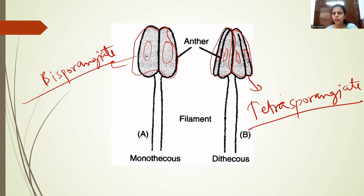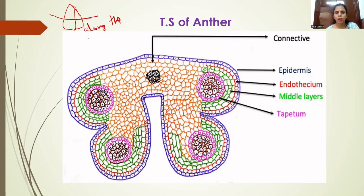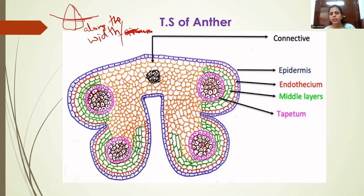Next we will discuss the TS — transverse section — of anther. To take a transverse section, you cut the anther from the center along the width. When you cut the anther along the width and take a thin section and observe it under a microscope, you get the transverse section of the anther. This transverse section is a very interesting structure as it has different layers of cells or tissues present in it.